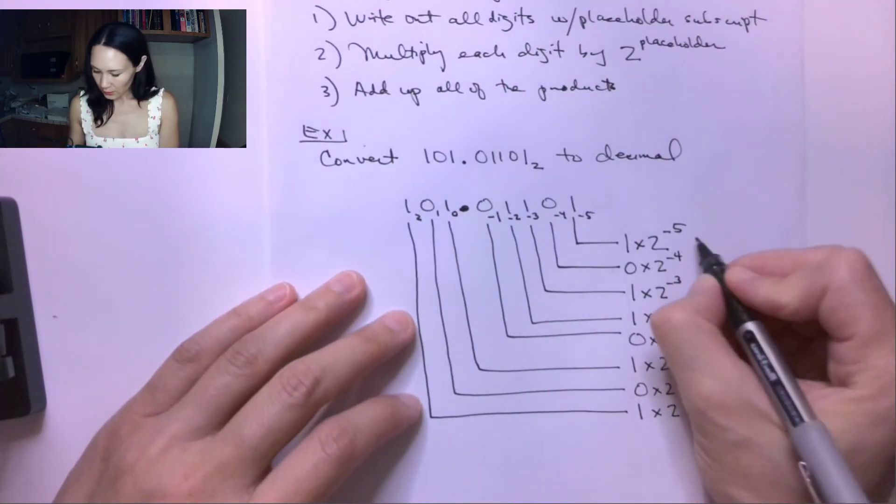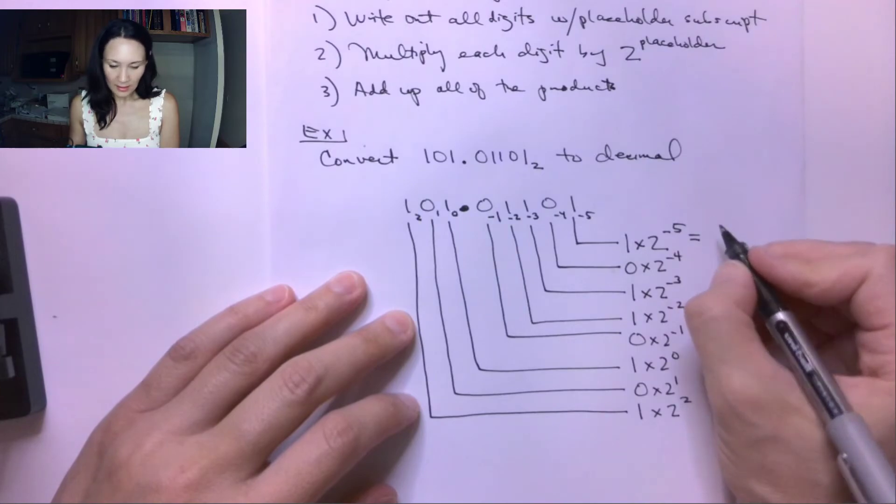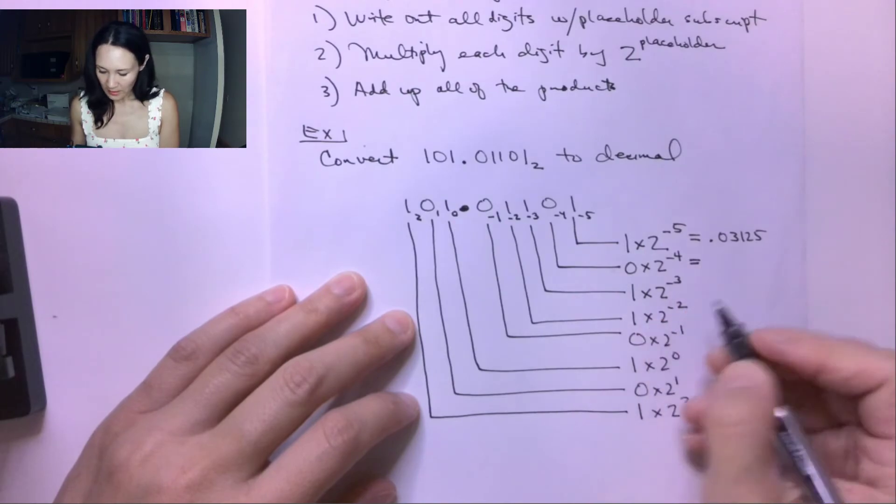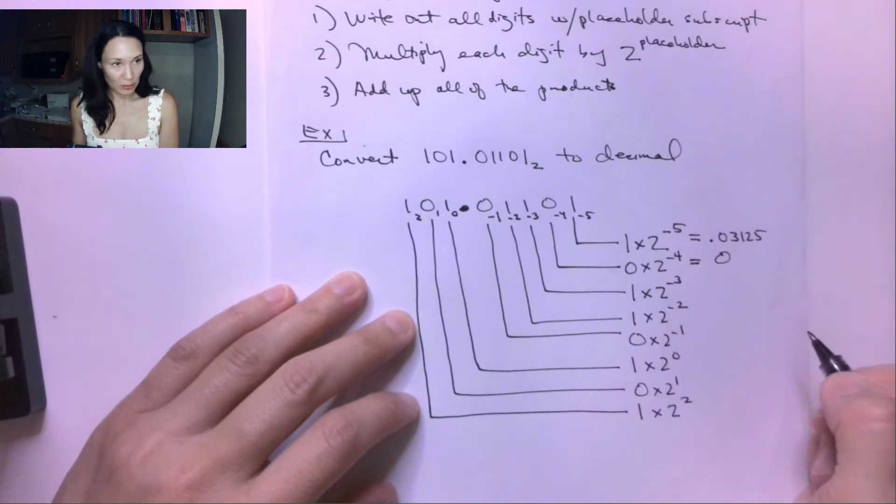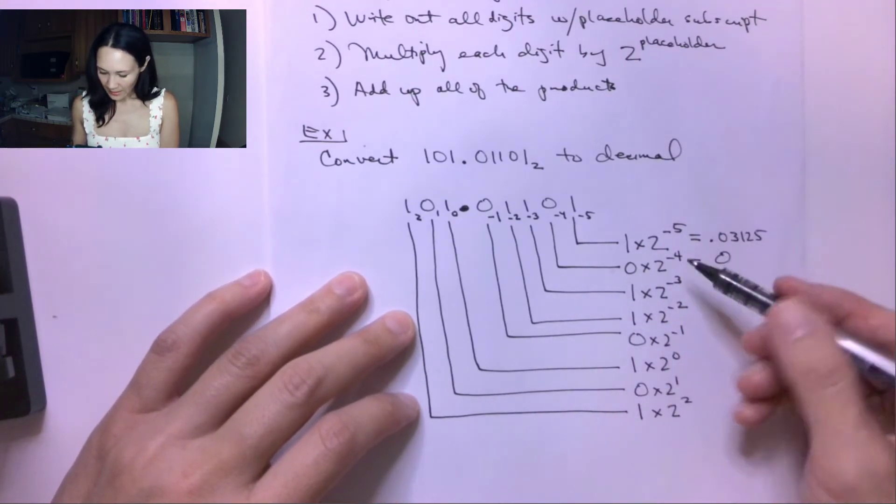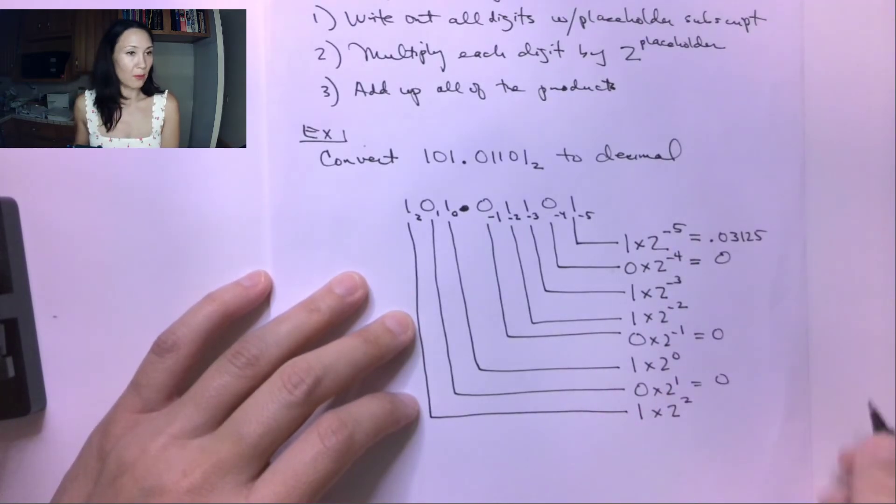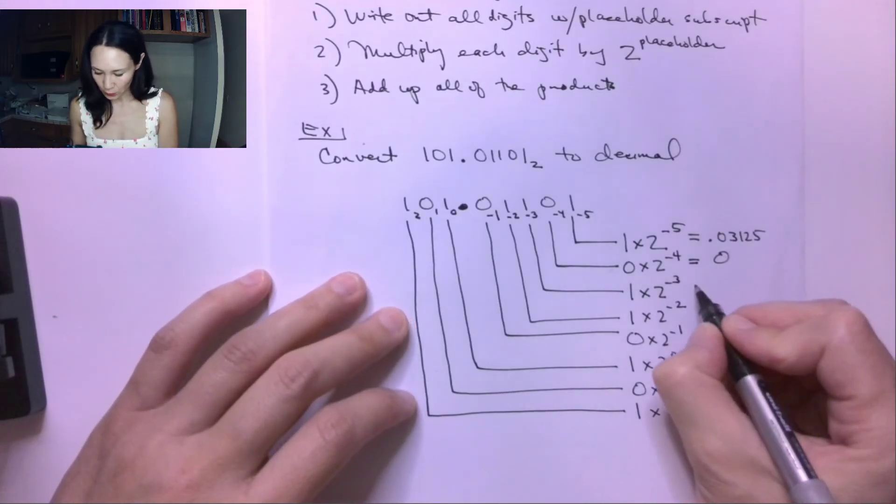So let's go ahead and do all these multiplications. This is going to give us 0.03125. This will be 0, because it's being multiplied by 0. Actually, everywhere we have a 0, this is going to make no contribution to our final number, so we can just take that little shortcut.